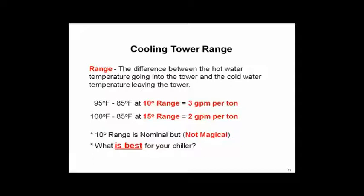So on the 15-degree range, my average condensing temperature is 92.5°F versus 90°F on the 10-degree range. The centrifugal chiller has to work harder because condensing temperature controls pressure — the higher the condensing temperature, the more work the chiller does, the more KW on the electric bill. But on the 15-degree range you've reduced condenser water pump flow to 2 GPM per ton versus 3. You must look at both: the increase in chiller KW and the decrease in pump KW to determine what's best for your application.